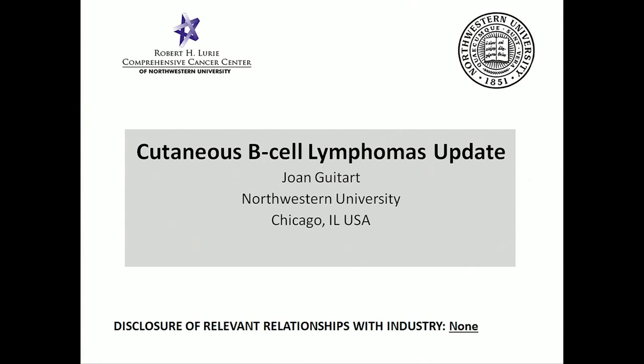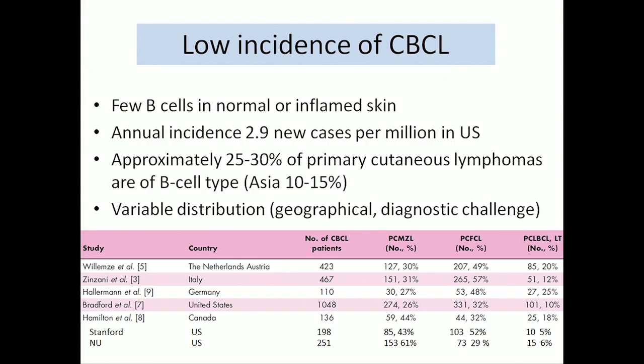Let's talk about B-cell lymphomas. I'm covering for Dr. Subtil, but I gave a talk at the Academy last year. We know that the normal skin has very few B-cells — you only find a few B-cells close to adnexa. That's probably why the incidence of B-cell lymphoma, unlike lymph nodes, is very low.